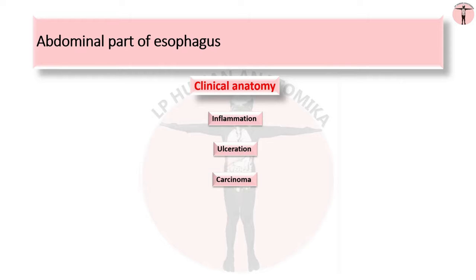To recap, we discussed the location, relations, blood supply, nerve supply, lymphatic drainage, and clinical anatomy of the abdominal part of esophagus. Next, we will discuss the details of the stomach.